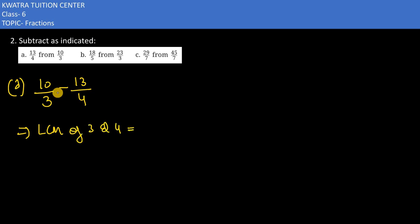The LCM of 3 and 4 is 12. First, write 12 in the denominator. Multiply the first number by 4, so you would write 40. In the second situation, multiply by 3, so 13 into 3 is 39. 40 minus 39 is 1, so 1/12 will be the answer for part A.